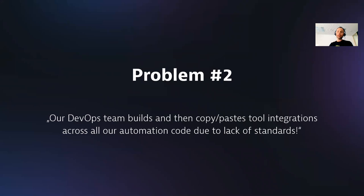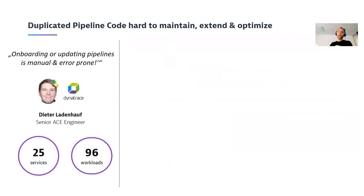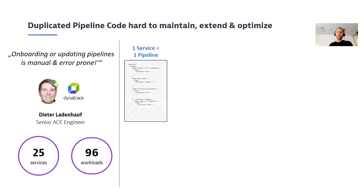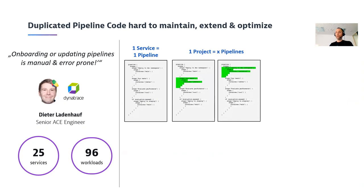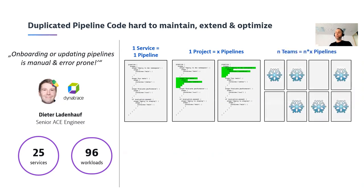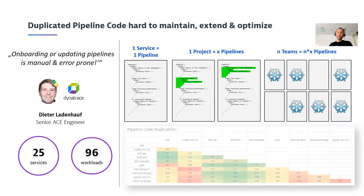The second problem is that DevOps teams in charge of tool integrations and pipelining find that these pipelines tend to contain tool integrations that are often custom-made, custom-built, and then copy-pasted around because of a lack of standards. This is an example from Dita, a senior ACE engineer here at Dynatrace, who says onboarding or updating pipelines is manual and often error-prone. His environment is much smaller than Christian's, but the challenge is you start with one pipeline for one service, then copy and paste and modify small things for other services, ending up with many different pipelines per project — the classical snowflake effect.